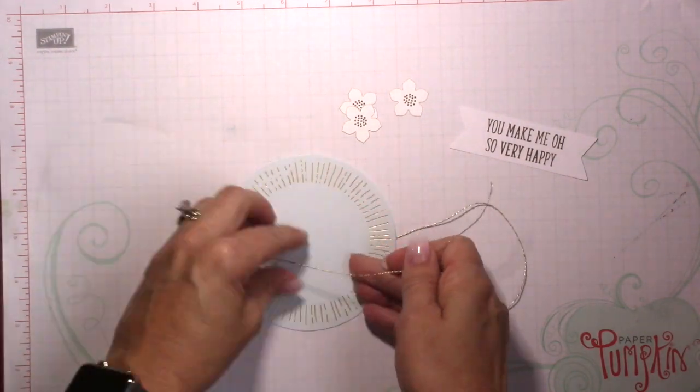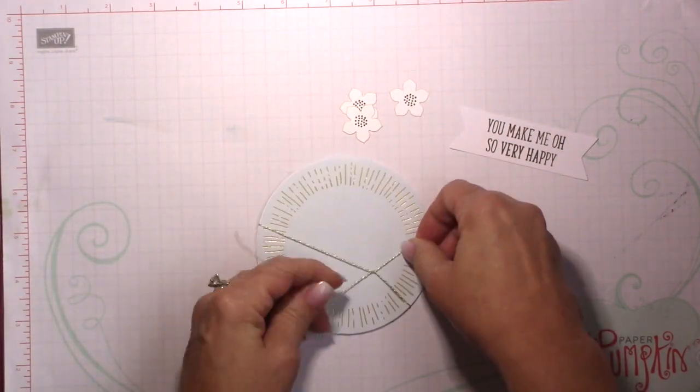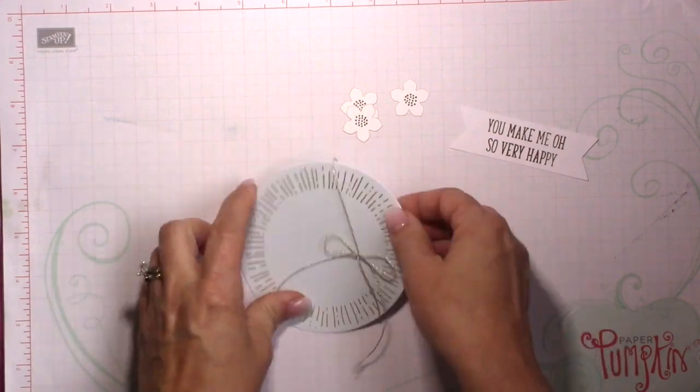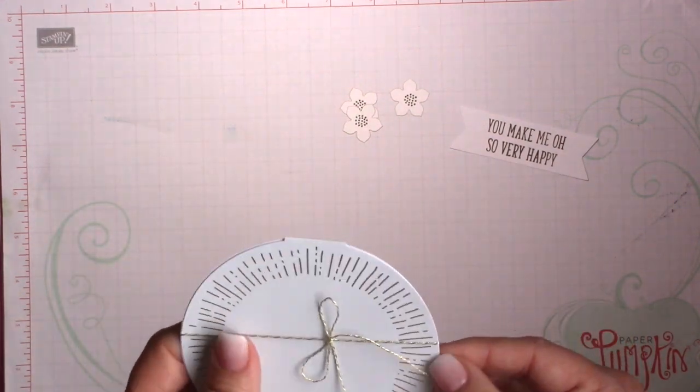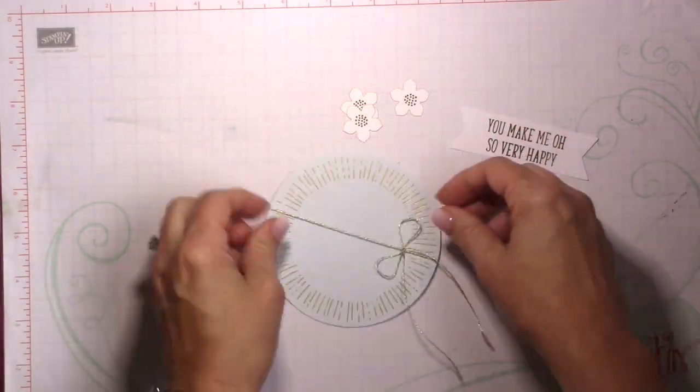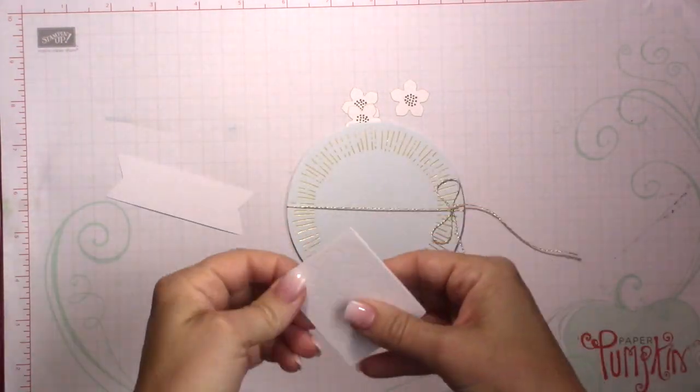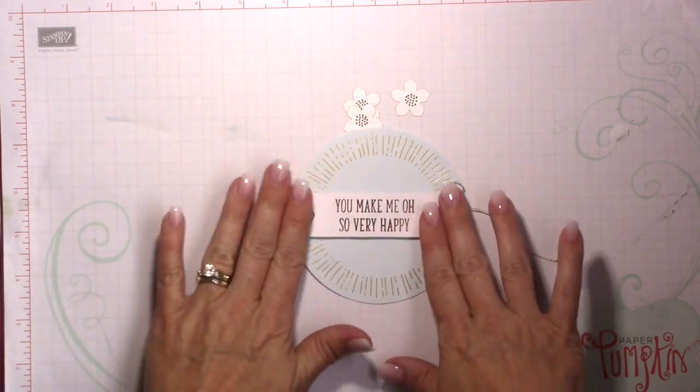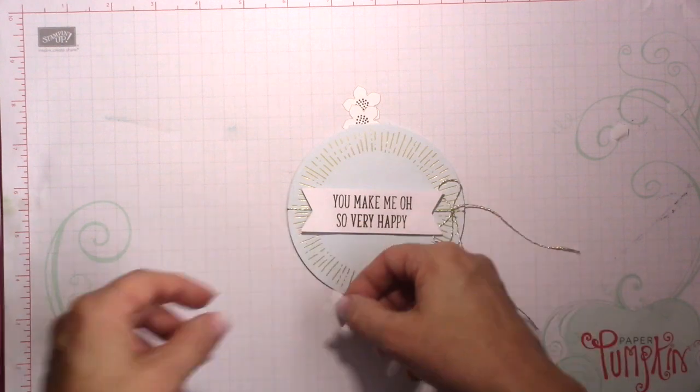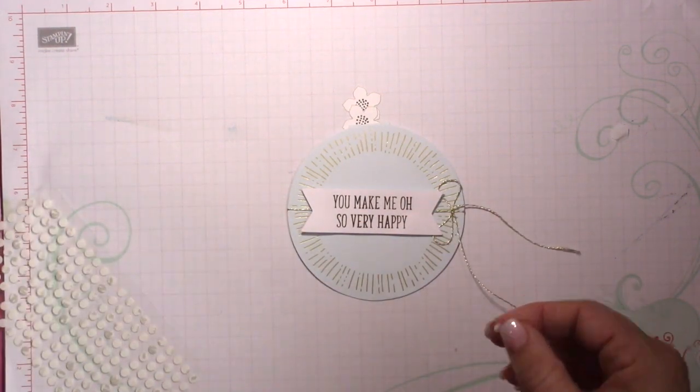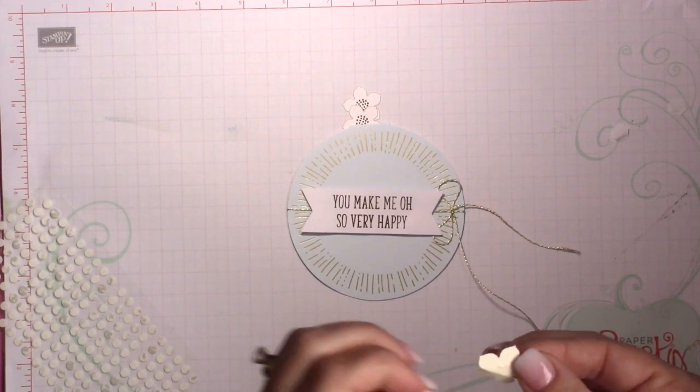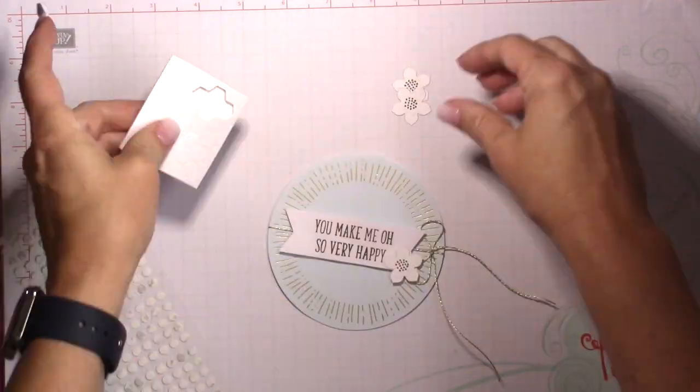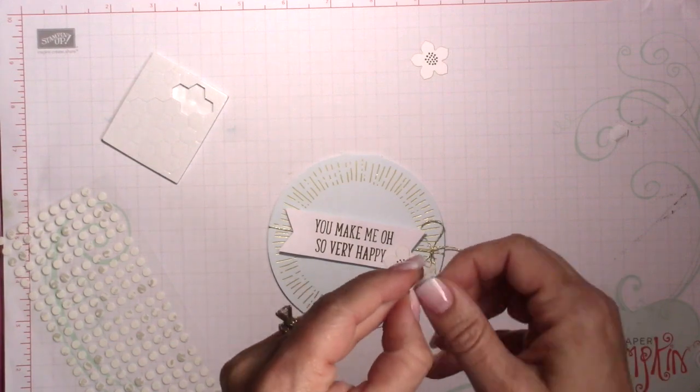But I wanted to also just remind you, if you have been considering joining Paper Pumpkin, you have until June 10th to subscribe. And if you are a first-time subscriber, you get 25% off your first three months. So I will be sure to put that promo code down in the description box for today's video as well as on today's blog post. But it's $19.95 a month, tax is extra, shipping is included in that price. So your credit card is billed the 10th of every month and then it comes automatically to you.